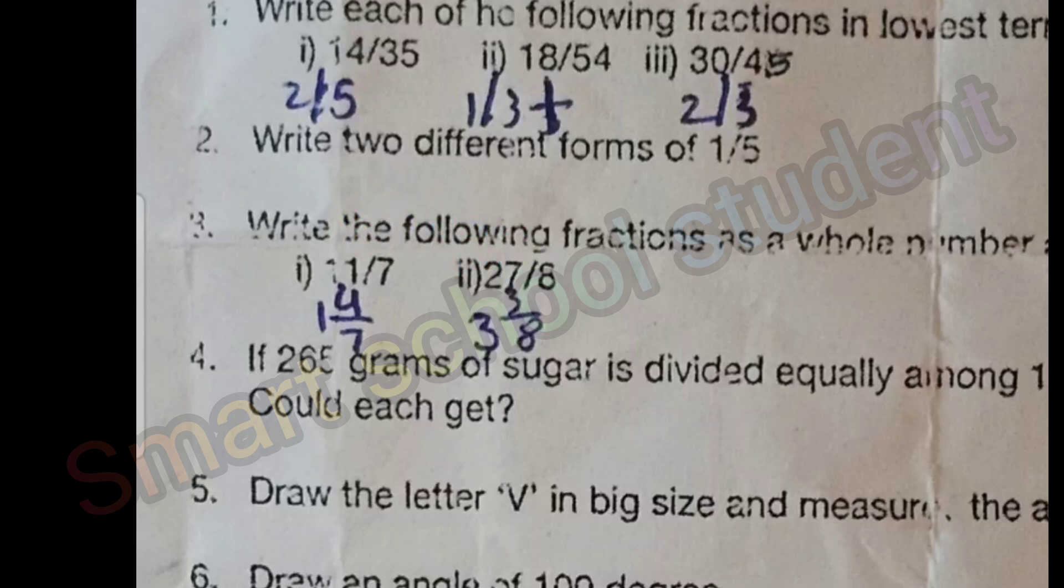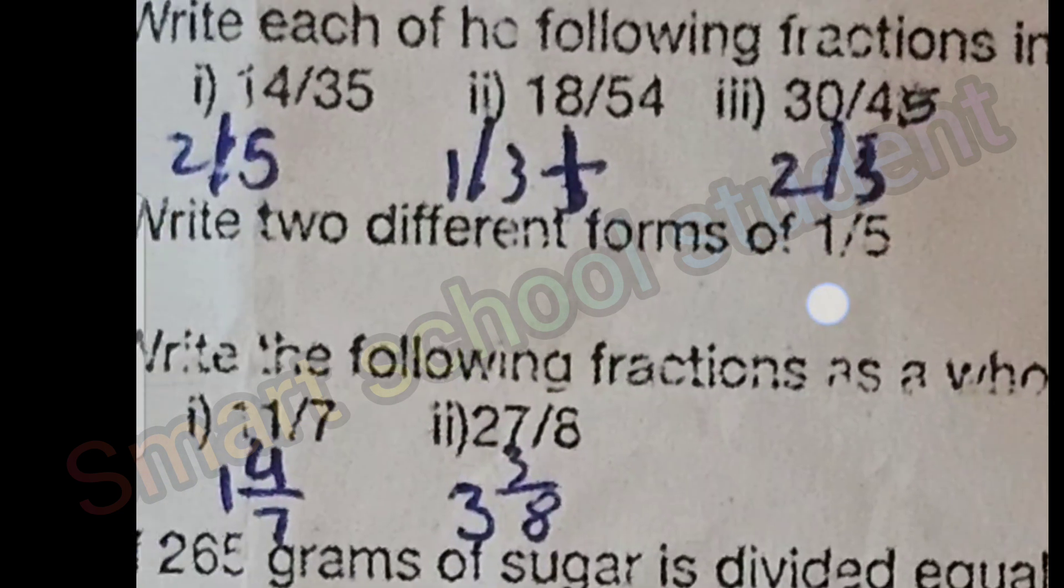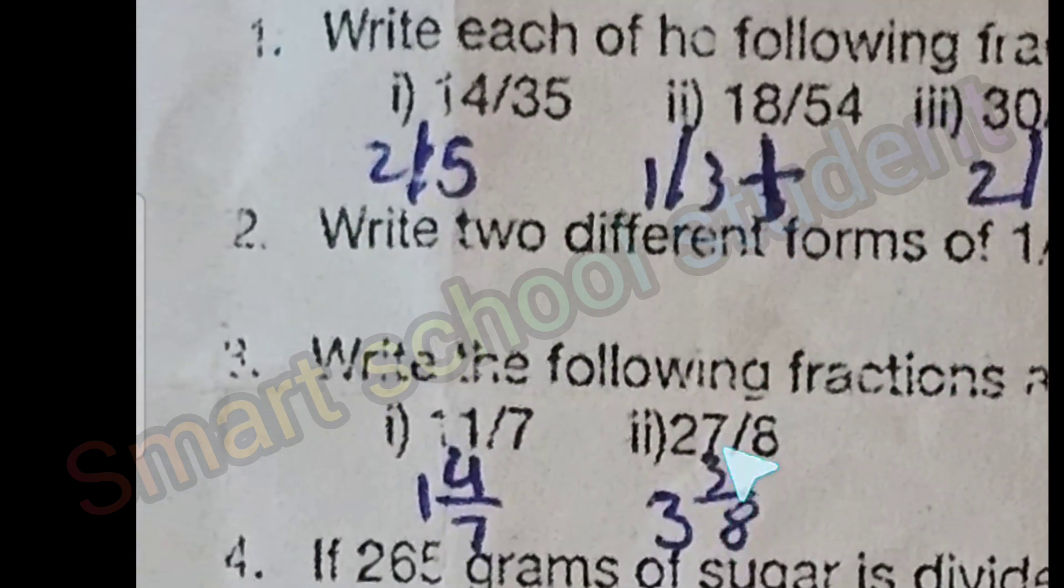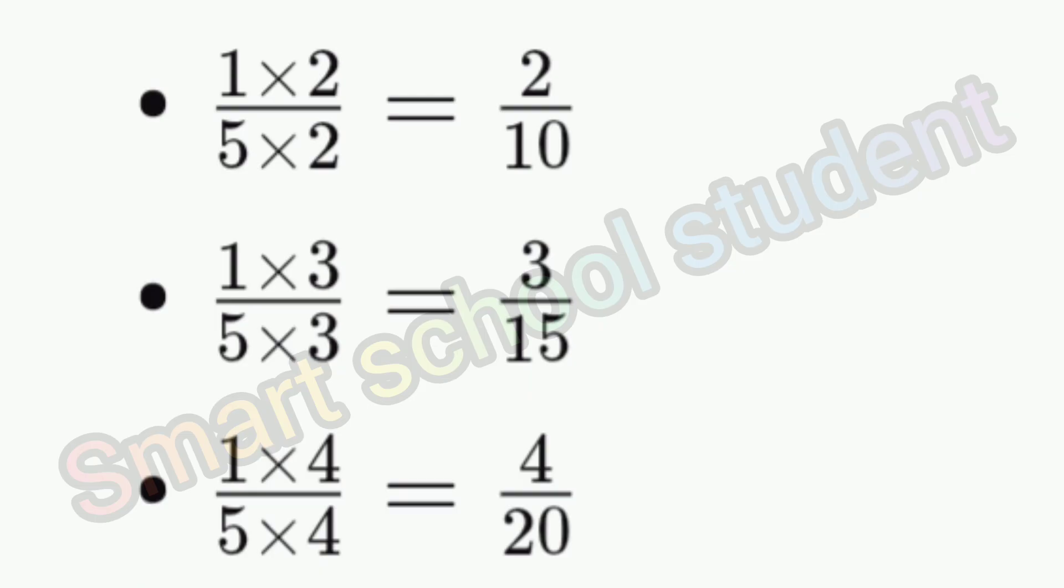Next question, write two different forms. Multiply numerator and denominator to get 2 divided by 10, 3 divided by 15, 4 divided by 20.